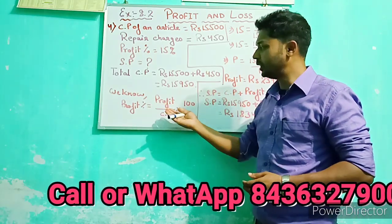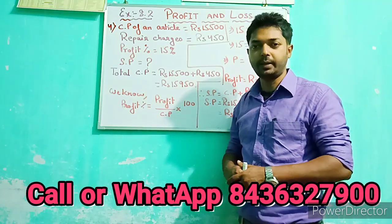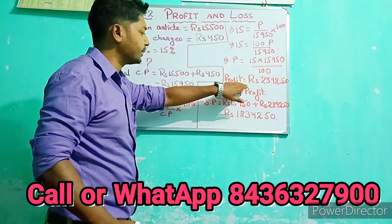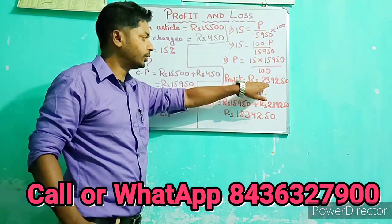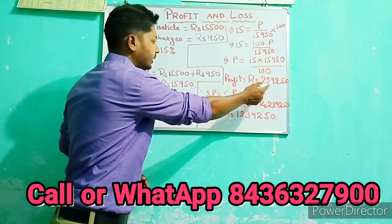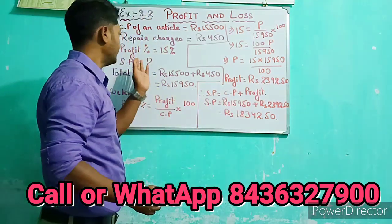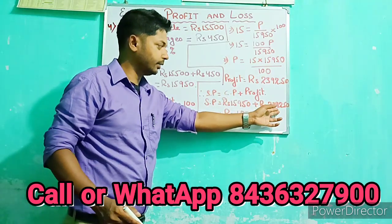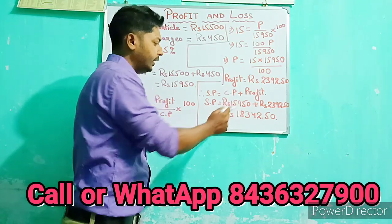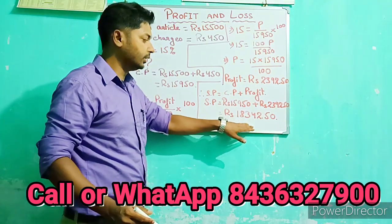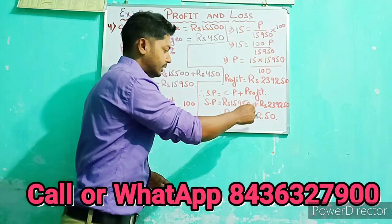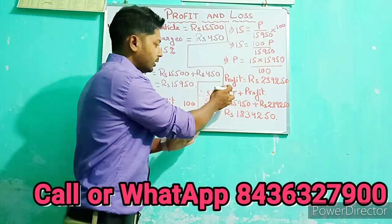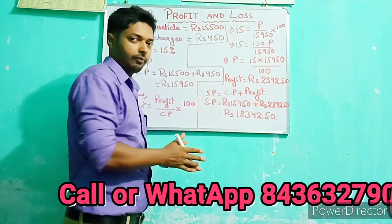Using the profit percent formula — Profit divided by CP multiplied by 100 — the profit comes out to Rs. 2,392.50. The SP equals CP plus Profit, so Rs. 15,950 plus Rs. 2,392.50 gives a total SP of Rs. 18,342.50. So SP includes CP plus the profit.